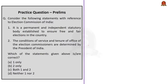The next prelims question is about the Election Commission of India. The first statement says the Election Commission of India is a permanent and independent statutory body — this is incorrect, as the ECI is a constitutional body formed under Article 324 of the Indian Constitution. The second statement says the conditions of service and tenure of office of Election Commissioners are determined by the President of India — this is correct. So the correct answer is option B, statement 2 only.